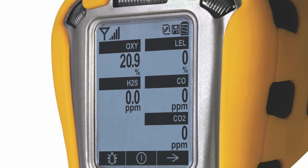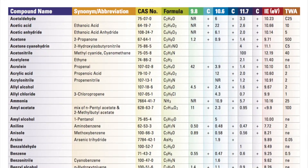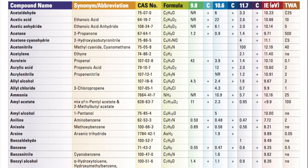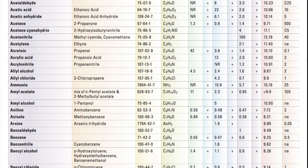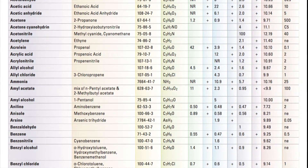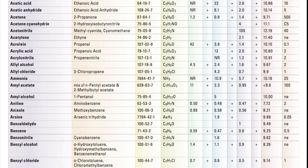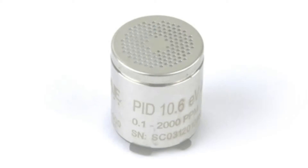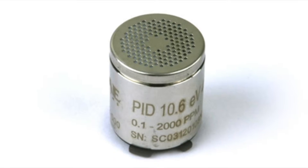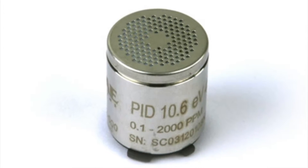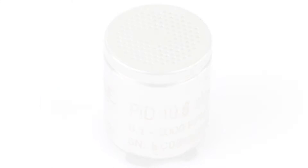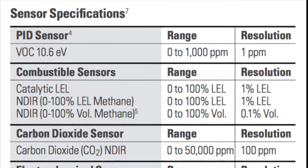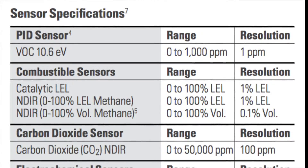The sensors available for the Light and Multi-Ray include a 10.6 electron volt photo ionization detector for broad spectrum VOC measurement, with a range from 0.1 to 5,000 ppm and a resolution of 0.1 ppm on the Multi-Ray, and a limited range of 1,000 ppm with a resolution of 1 ppm on the Light.